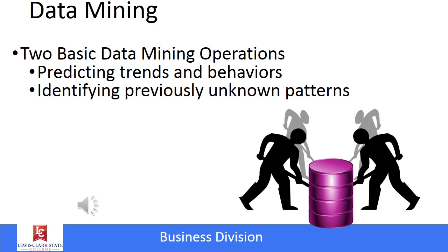Data mining involves looking at the data that's out there. There are two basic data mining operations: number one is predicting trends and behaviors, or identifying patterns that weren't previously known. Data mining can be structured, where miners have a hypothesis or model they're setting out to prove or disprove, or unstructured, where data miners just go in and see if they can develop a model from what they find.